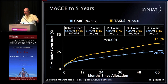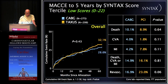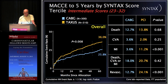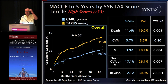Looking at all groups in the SYNTAX trial at five years, outcomes were significantly better for CABG versus PCI. When broken down by SYNTAX score, patients with low scores below 22 showed no difference — confirming the validity of PCI for focal lesions with low SYNTAX scores. As scores increased and coronary complexity rose, differences began to emerge. In the high-tertile score group, there were dramatic differences between CABG and PCI, confirming that in patients with complex and very extensive coronary artery disease, coronary bypass surgery probably offers a better option.